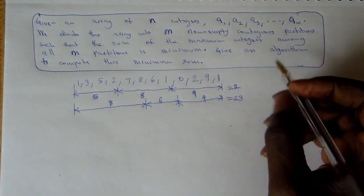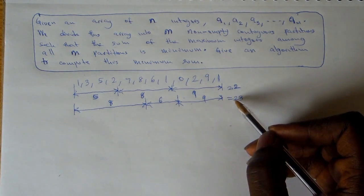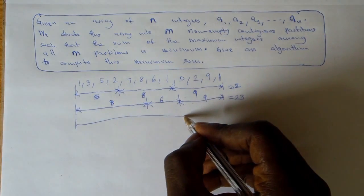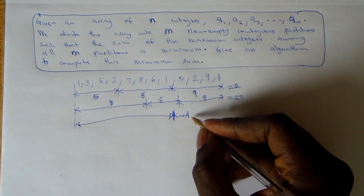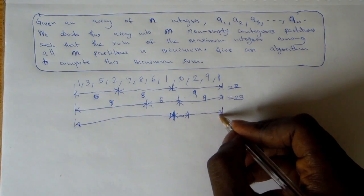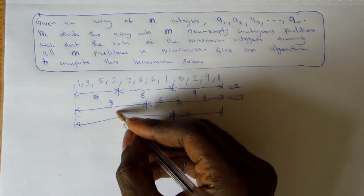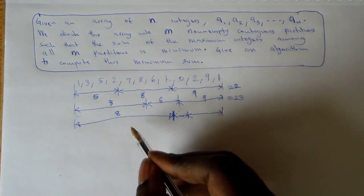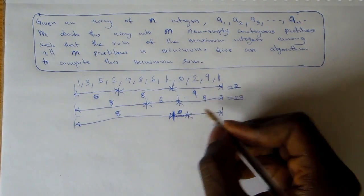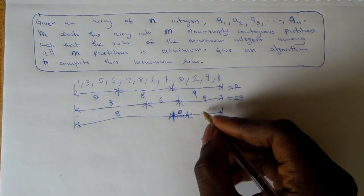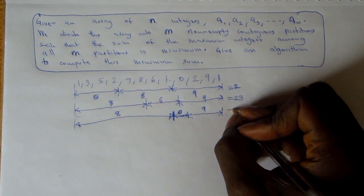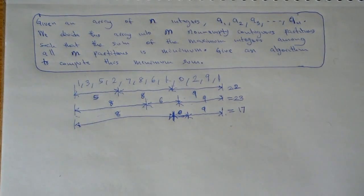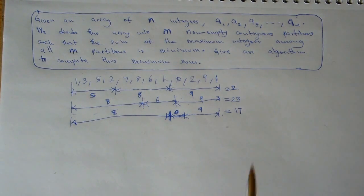We can see that different partitionings give different sums — the first was smaller than the second. We could also partition it so the first partition covers elements up to 8, the second partition is just [0], with maximum 0, and the third partition has maximum 9. In this case the sum is 8 plus 0 plus 9, which is 17. The problem is to find the partition that gives the minimum sum.